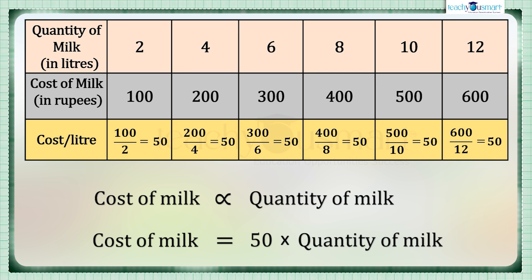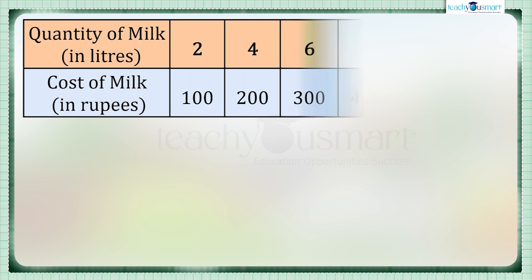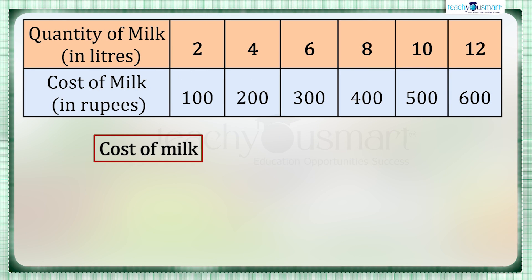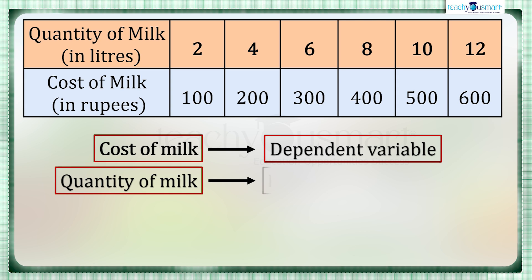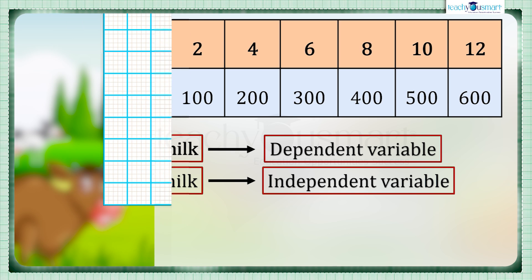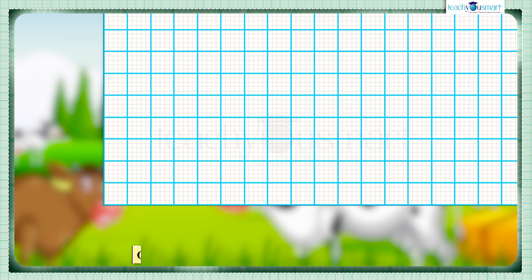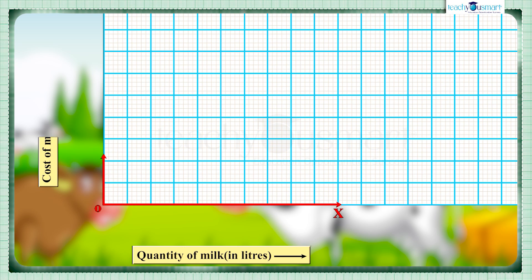So we can say that the cost of milk is a dependent variable and the quantity of milk is an independent variable. Therefore, we take the quantity of milk on the x-axis and the cost of milk on the y-axis.